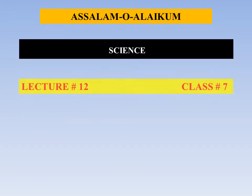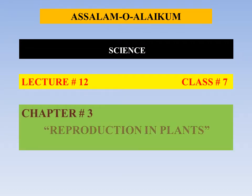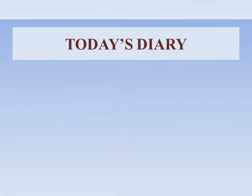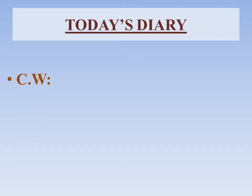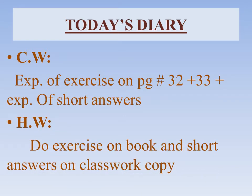This is lecture number 12, science class 7, chapter number 3: Reproduction. Today's classwork: we will do two types of work — explanation of the exercise on pages 32 and 33, and explanation of short answers. For homework, you have to solve the exercise in the book and write short answers in your copy.